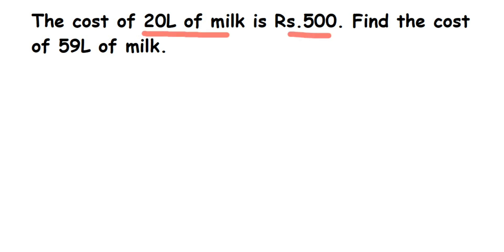In this type of question we're going to use unitary method. Unitary method means we're going to find out for one value and then we're going to find out for the rest of it.